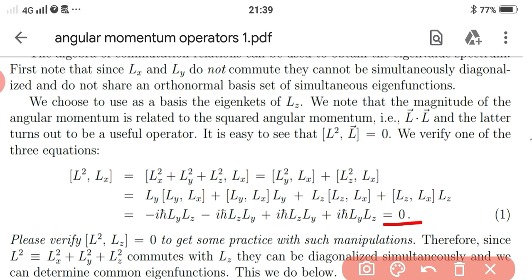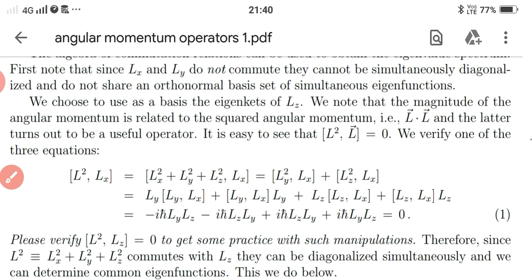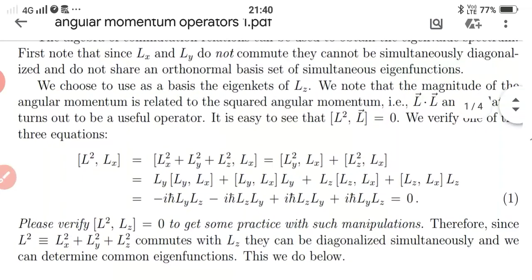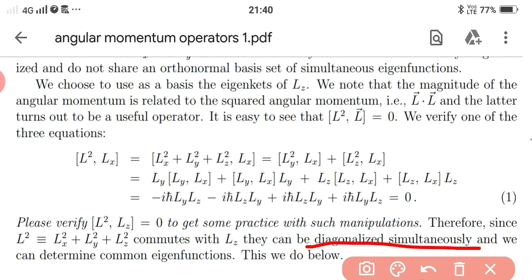Similarly, we can verify that the commutator of L² and Lz is also equal to zero. Since these operators commute with each other — because the commutation relation equals zero — we can say they can be simultaneously diagonalized and we can determine their common eigenfunction.